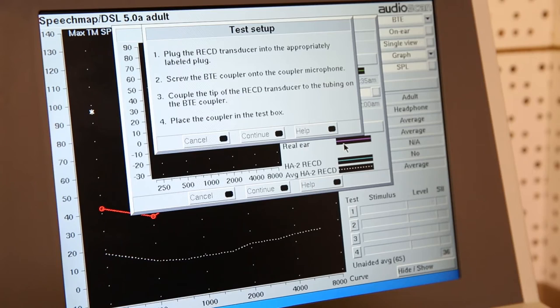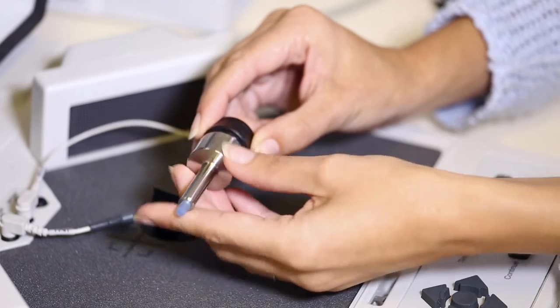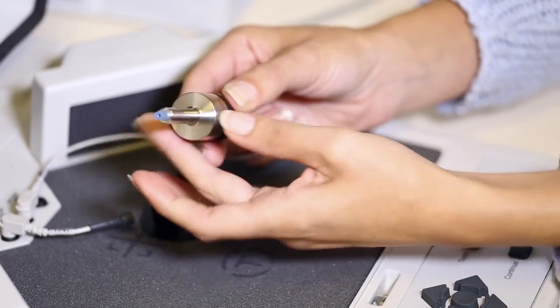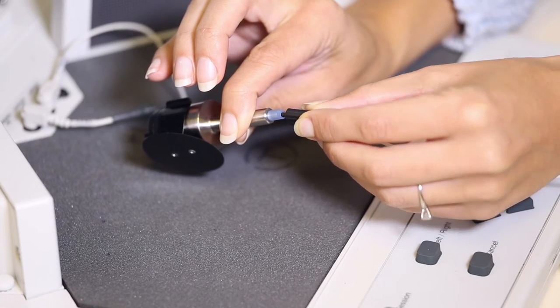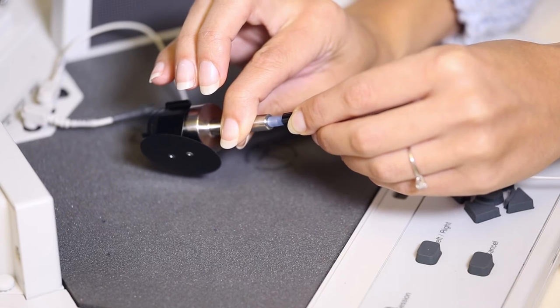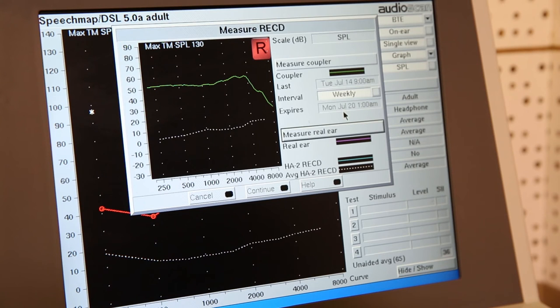Remember that RECD is not a measure of verification. The prompts on the screen show you exactly what to do. First, we test the coupler in the test box. Attach the coupler to the coupler microphone. And then attach the RECD transducer or speaker to the coupler like so. Push continue. The measurement should look like this. This shows the resonance characteristics of the 2cc coupler when a 55dB shh sound is played into it.